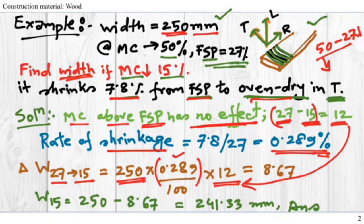So my total width: original width, rate of shrinkage, and then change in moisture content from FSP to target moisture content. So that gives us 8.67 millimeters. This is the width drop due to moisture drop from FSP to 15%.